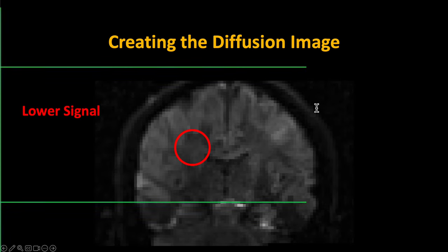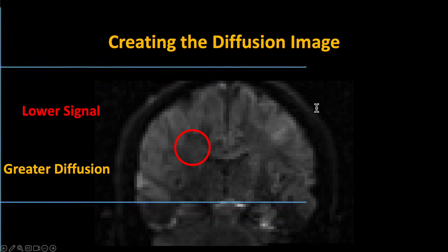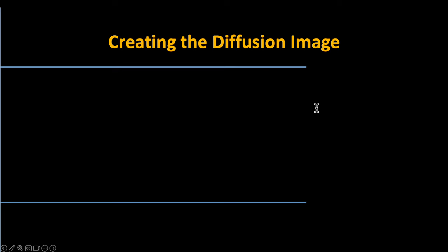Revisiting this diffusion image: if we have lower signal in a region like the white matter, that indicates greater diffusion. The way we're going to visualize it on the brain and get a better sense of where the diffusion is happening along which different axes, we're going to be fitting what's called a tensor — a three-dimensional model of the diffusion in that image.